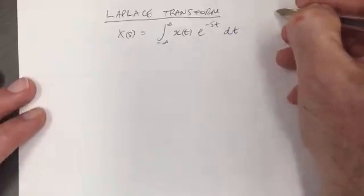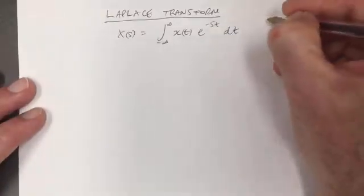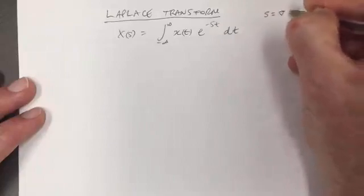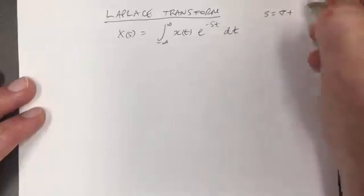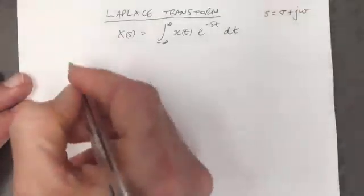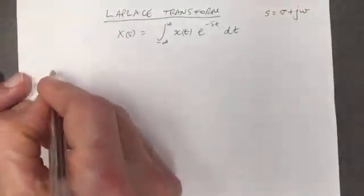So for the Fourier transform we simply had j omega in there, but now s is a complex number. It has a real part plus an imaginary part, so that's sigma plus j omega.